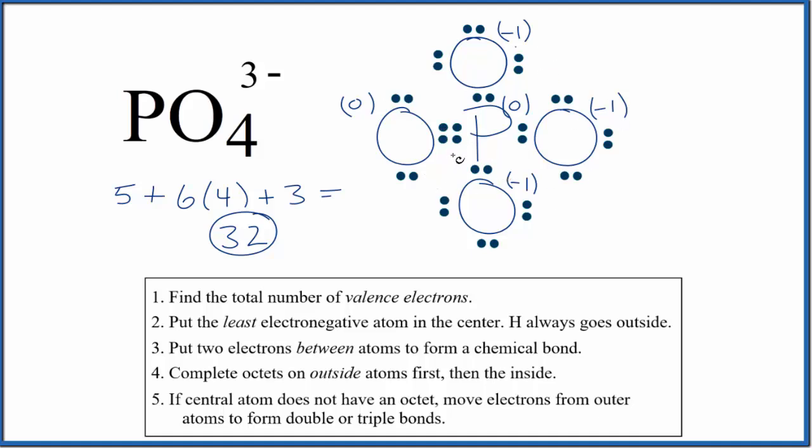Because this is an ion, we should put brackets around it and then put a three minus out here to show the charge. So this is the best Lewis structure for PO4 3 minus.